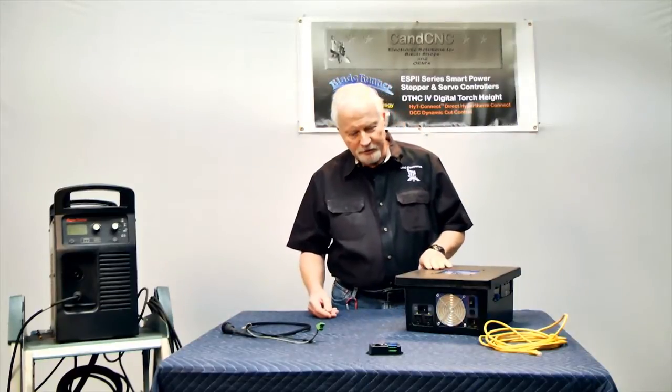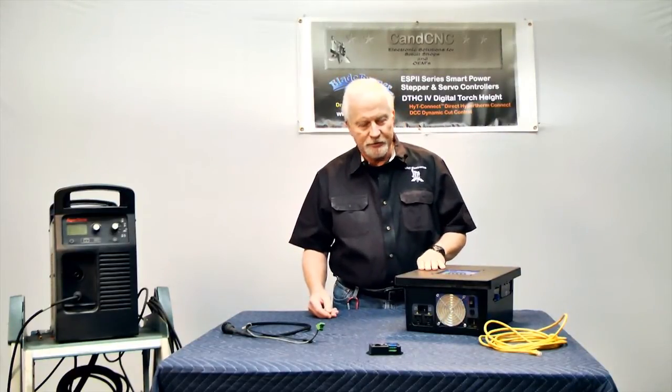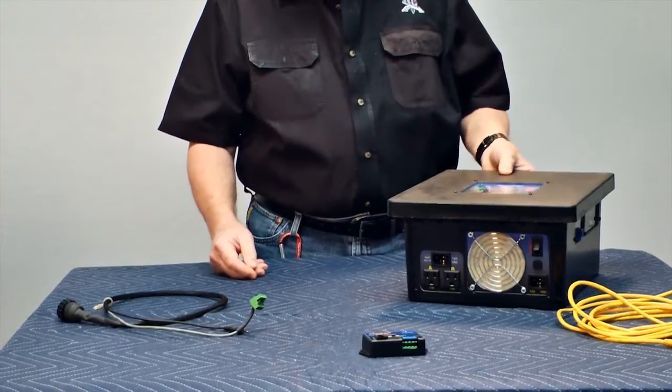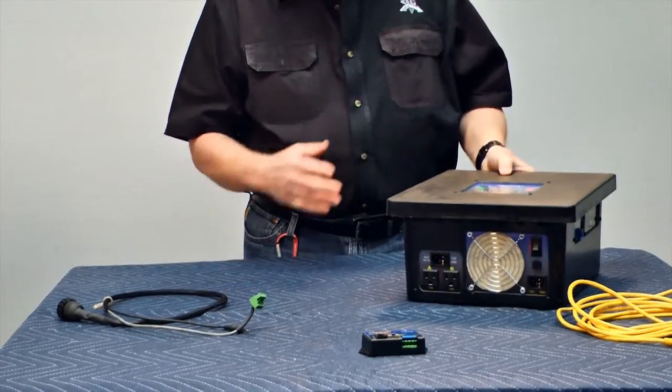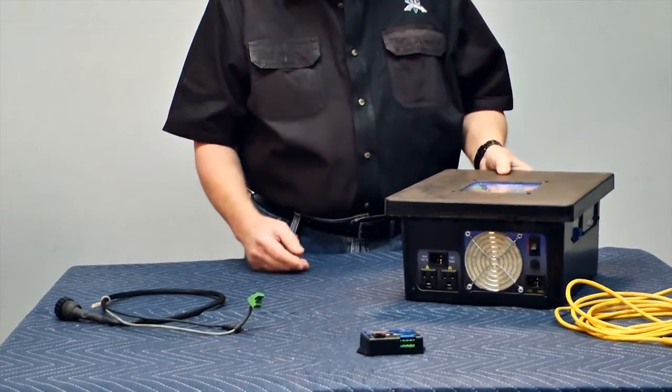This box right here is one of our controller boxes. It's a Blade Runner box. It's got the torch height control built into it.